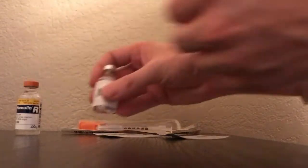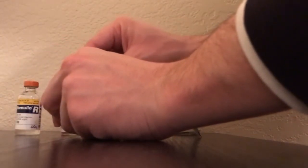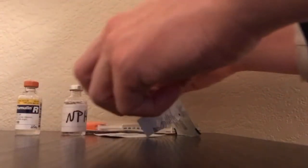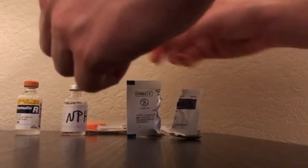Grab your alcohol swab and clean the top of the NPH vial for about five to ten seconds, then allow it to dry. Use a different alcohol swab to clean the clear vial. You don't want to use the same one because you'll be cross-contaminating both of them. Allow that to dry as well.